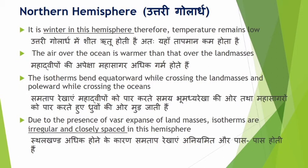In the northern hemisphere in January, it is winter, therefore temperature remains low. When there is summer in the southern hemisphere, winter is in the northern hemisphere. The land masses are colder in winter than ocean water bodies, because land cools more than oceans. So the temperature is lower and the isotherms will behave differently over the northern hemisphere.